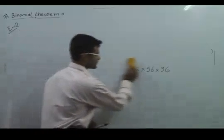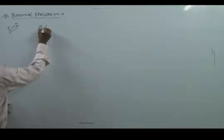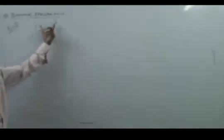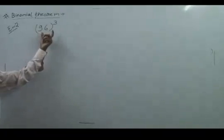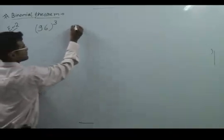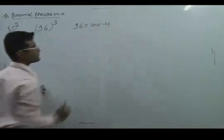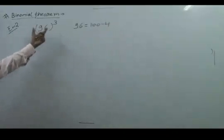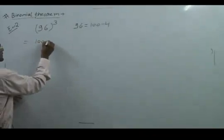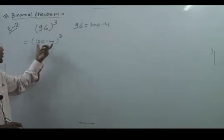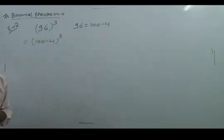Here is an example for 96 cube — how we can find out the value of 96 cube. As we can write 96 equals to 100 minus 4, so we can place 100 minus 4 at the place of 96 cube. So it is (100 minus 4) cube. Now we can open it by binomial theorem.